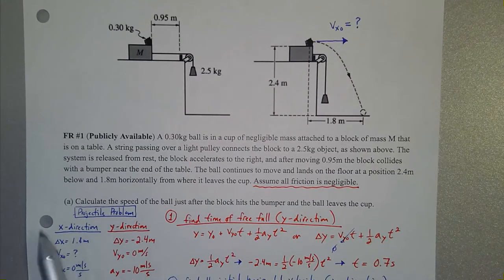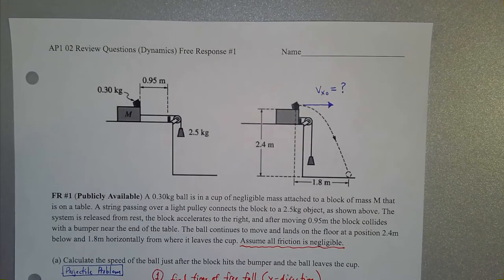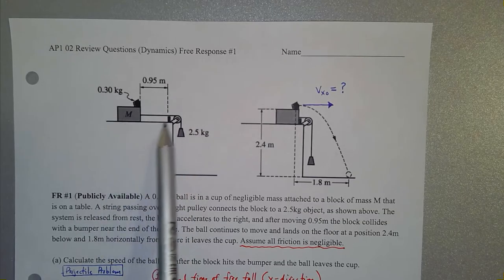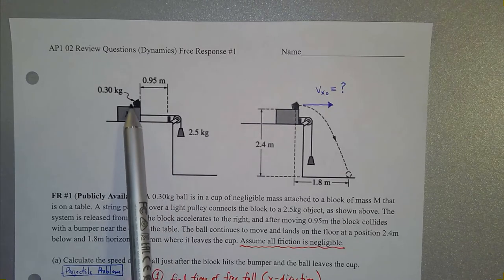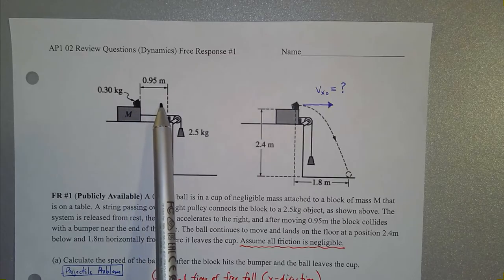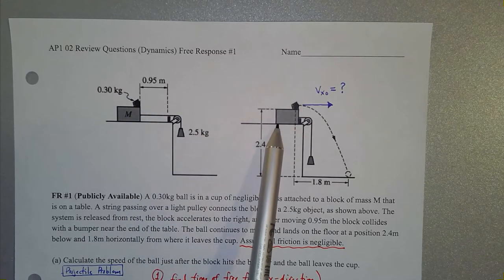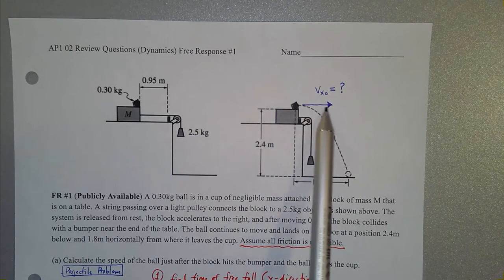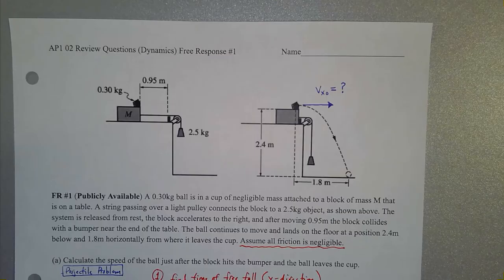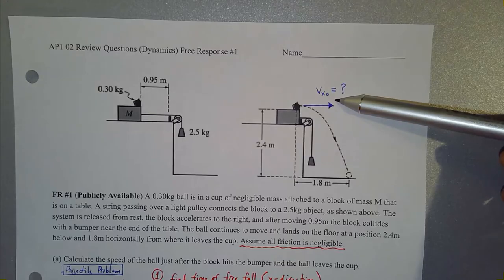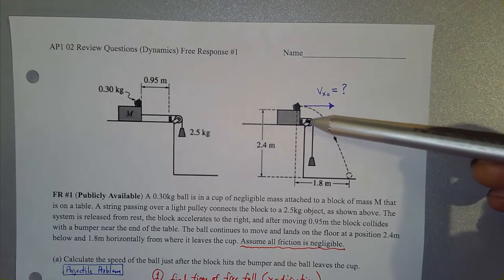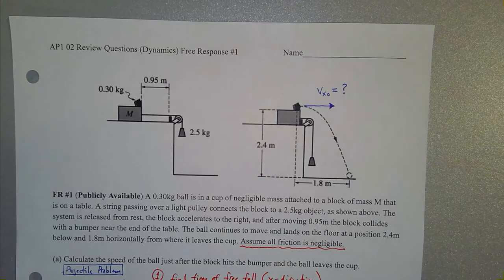Part A has you calculate the speed of the ball just after the block hits the bumper and the ball leaves the cup. The system is accelerating due to gravity on the hanging mass, and it accelerates over 0.95 meters starting from rest. Once the block hits the bumper, the ball is essentially a projectile. We need to find the initial launch velocity given that it falls 2.4 meters and travels 1.8 meters horizontally.